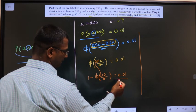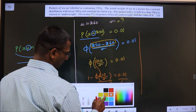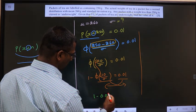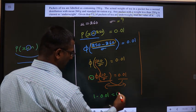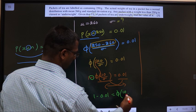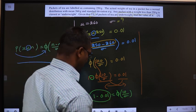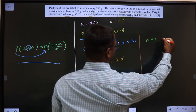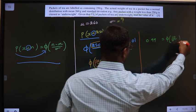Now all the numbers one side and this to the other side. So we get 1 minus 0.01 equal to—here it is negative, when it shifts become positive—10 by standard deviation. Now 1 minus 0.01 is 0.99 equal to φ of 10 by standard deviation.